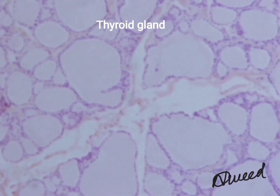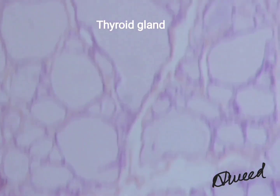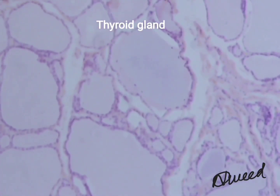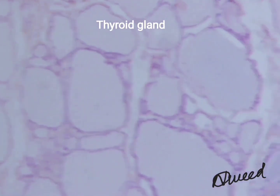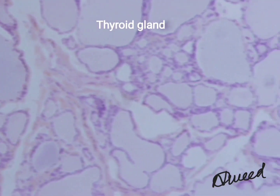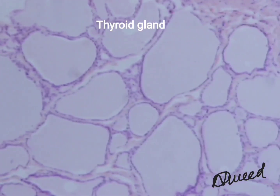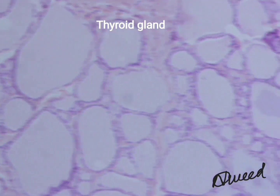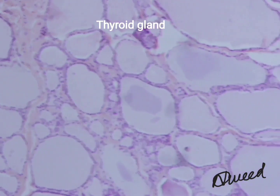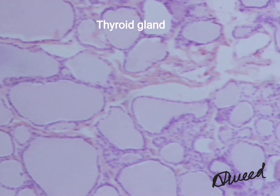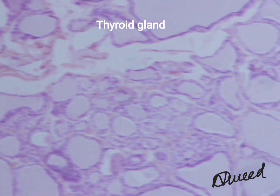In hyperactive follicles, follicle cells are columnar in shape. Microvilli are more prominent. Colloid is less in amount and colloid is liquid.